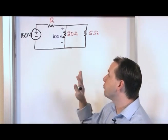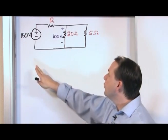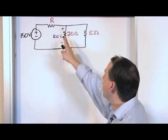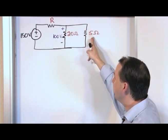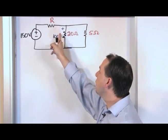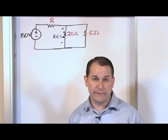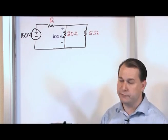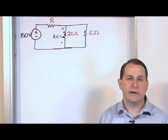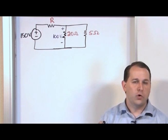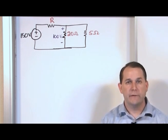Here we have the next problem on the board. We have a circuit with a 150 volt source, a 20 ohm resistor, and a 5 ohm resistor. We're given that the voltage drop across this resistor is 100 volts. We have another resistor here but we don't know what it is — the value is just R. The question is: find the value of R.